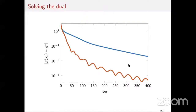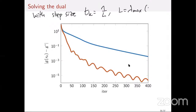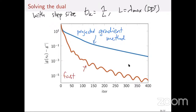This is something I implemented. With step size t_k = 1/L where L = lambda_max(DD^T), in blue is the projected gradient method and in red is the fast projected gradient method. We see that the fast projected gradient converges faster, and we also see the ripples that we've already observed in previous discussions.